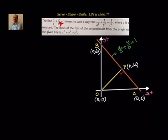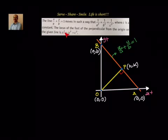The line x/a + y/b = 1 moves in such a way that 1/a² + 1/b² = 1/c², where c is a constant. The locus of the foot of the perpendicular from the origin on this given line is x² + y² = c².